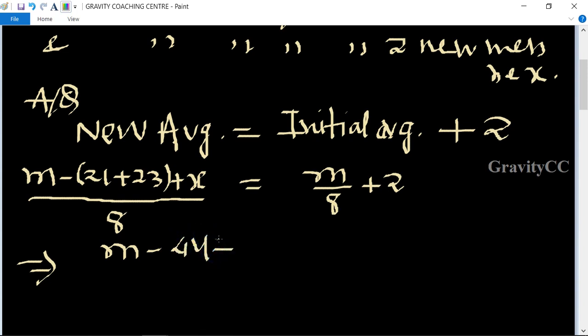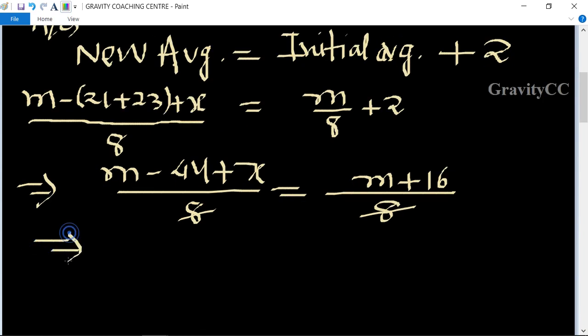Equals m upon 8 plus 2. So m upon 8 plus 16 upon 8. Eight cancels. Therefore x equals m plus 16 minus m plus 44. Here m cancels.